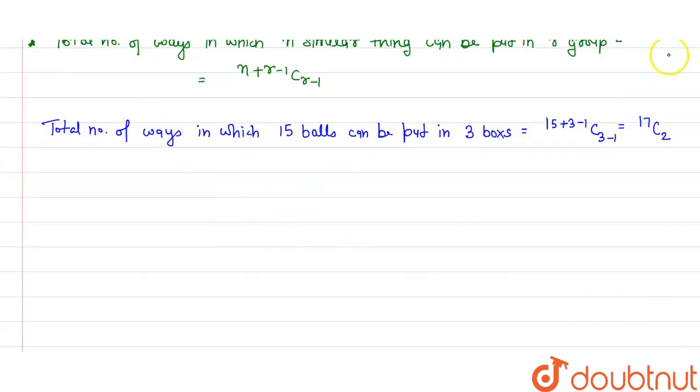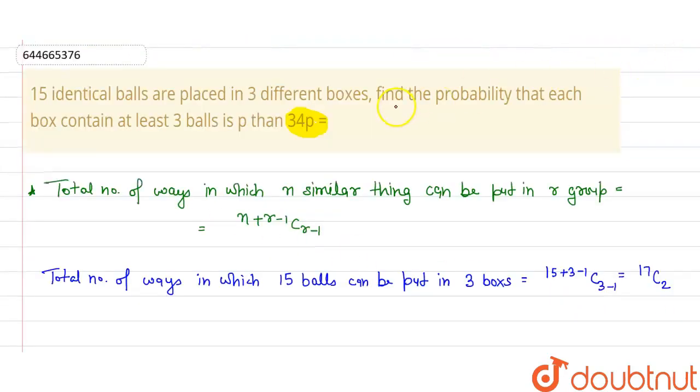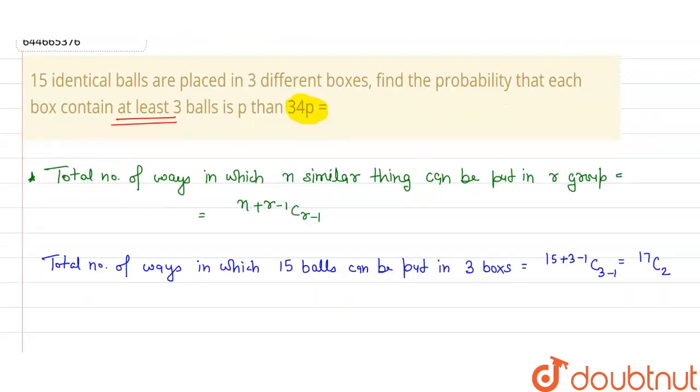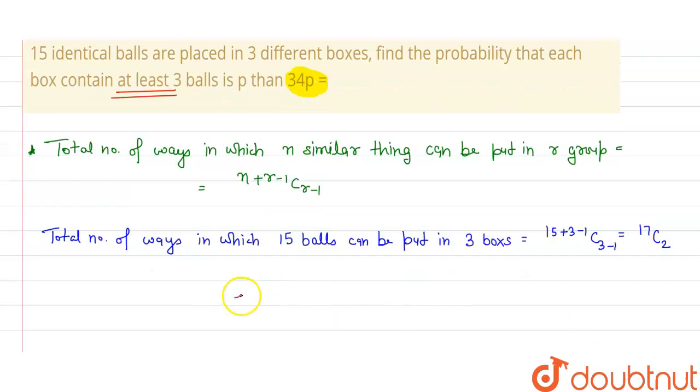Now the question is given that the probability that each box contains at least 3 balls. That means each box will have already 3 balls. Suppose this is box 1, this is box 2, and this is box 3. So all boxes get at least 3 balls, that means 3 or more balls. Suppose they all get 3, 3, 3 balls out of the 15 balls.